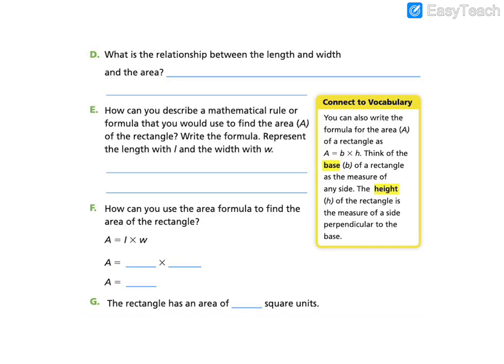Now what is the relationship between the length and width and the area? What's the relationship between 7 and 4 and 28? This is what the question is asking us. What can we do with these three numbers? The area is equal to the length times the width.